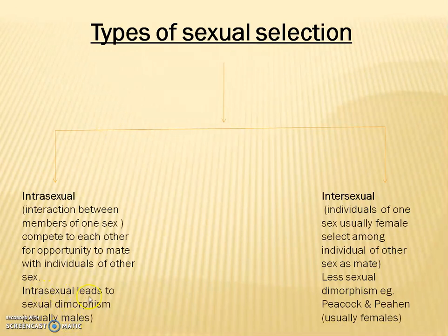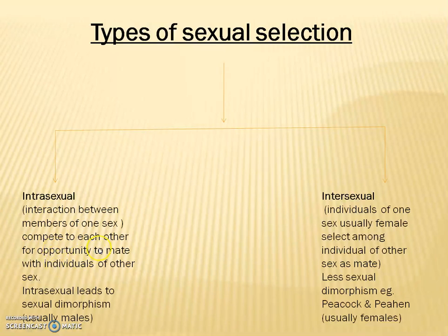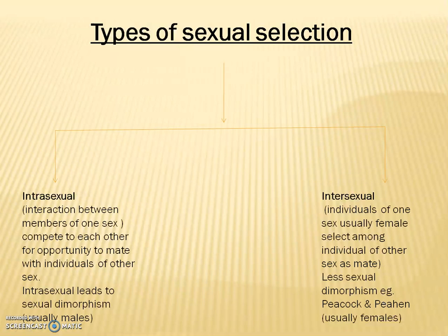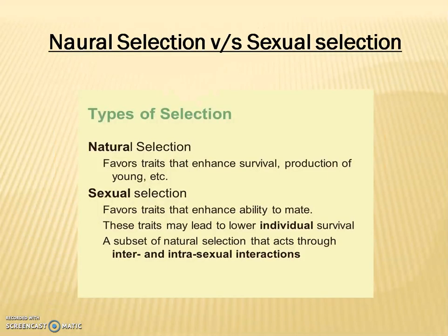Intrasexual selection leads to sexual dimorphism, where males and females are easily distinguished. Intra means interaction between members of one sex, competing for the opportunity to mate — in one line: competition and then selection. In intersexual selection, individuals of one sex, usually female, select among individuals of the other sex as mates. There is less sexual dimorphism. Example is peacock and peahen — the peahen prefers peacocks which have more spots, as this involves interaction between male and female.